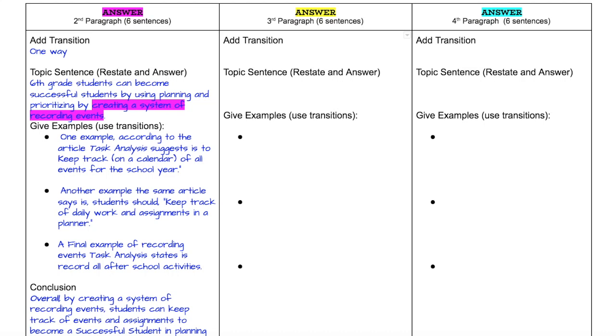I'm looking at the bottom, and it says I can use according to the author or according to. So I have used the transition, according to the article, Task Analysis suggests to keep track on a calendar of all events for the school year. So I've introduced using an introduction for a citation.